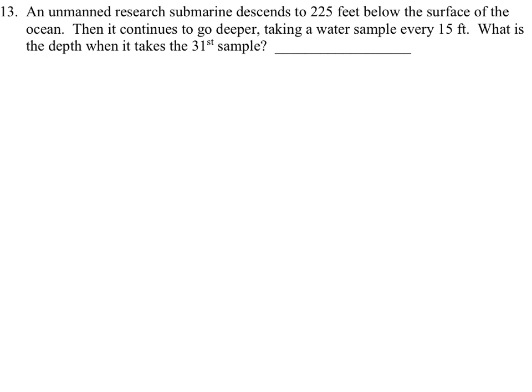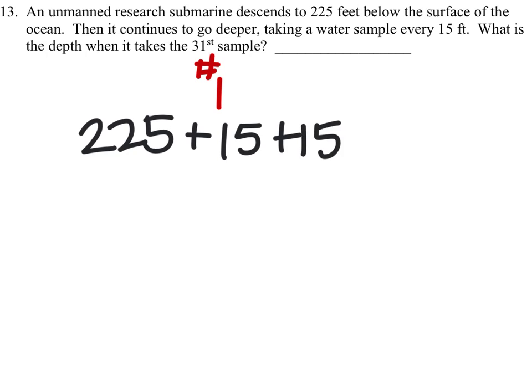So here's what happens: starting at 225 feet, it will continue to go down another 15 feet, which is where it takes sample number 1. Now if it goes down another 15 feet, then it will take sample number 2. And this will continue 31 times according to the problem.